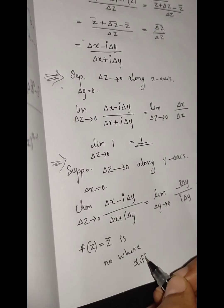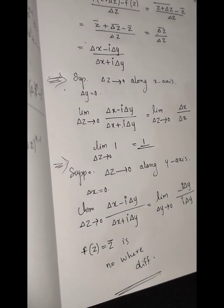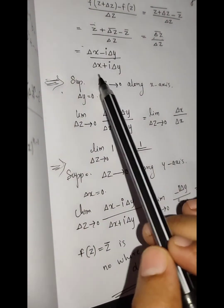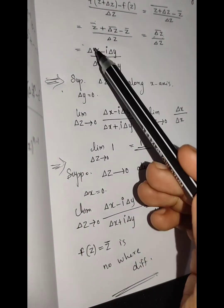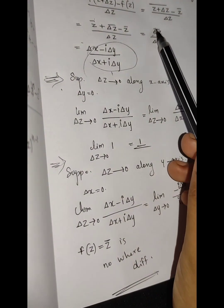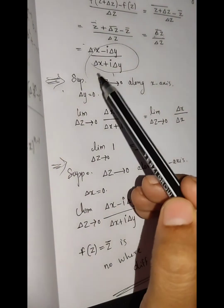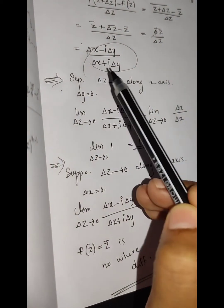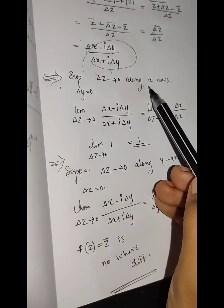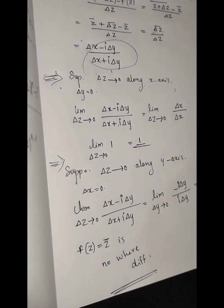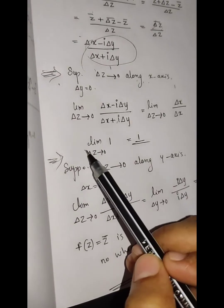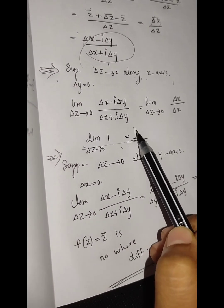This is nowhere differentiable. That's why we have the last conclusion. Then we have just conjugated the two results. The answer for delta z bar by delta z along the x-axis, where delta y equals 0, gives 1. Along the x-axis, delta y is 0.